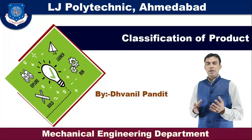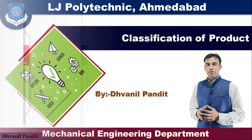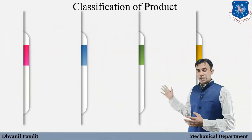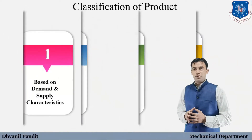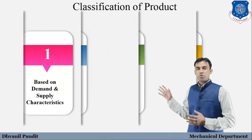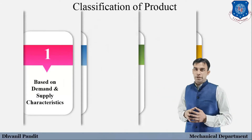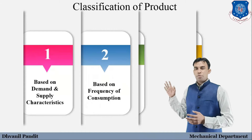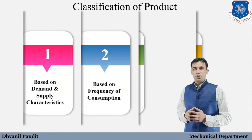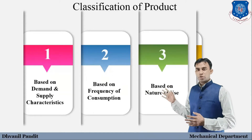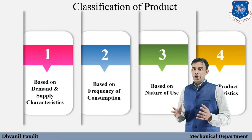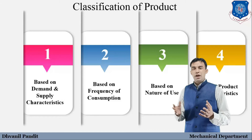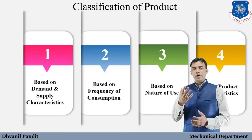Friends, let's talk about the types of products. As you can see, the classification of products has four types. The first is based on demand and supply characteristics. The second is based on the frequency of consumption. The next is based on the nature of use. And the last one is as per the characteristics. I am going to talk about all types of products.